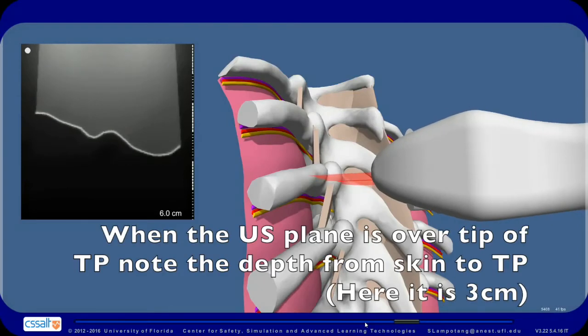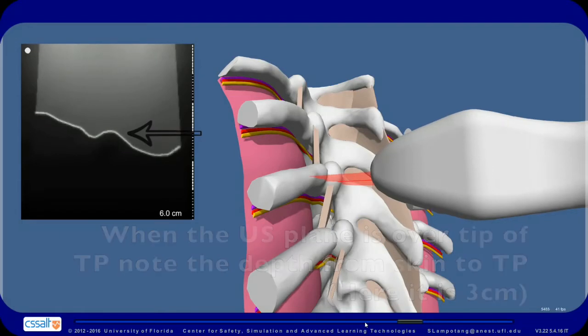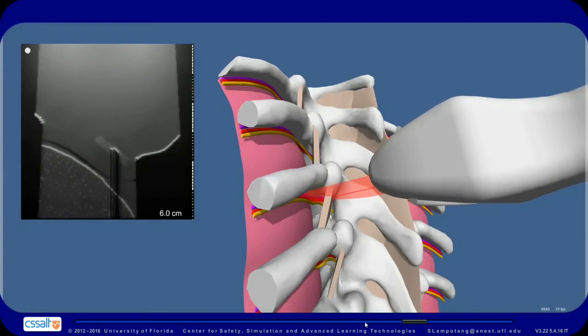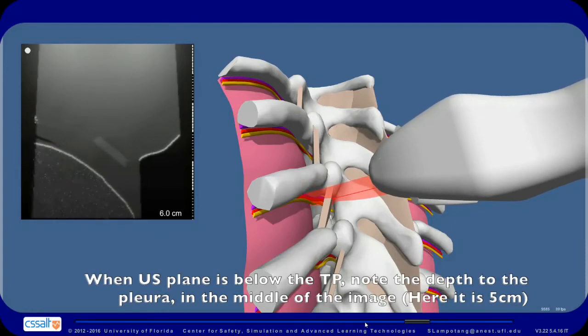When the ultrasound plane is over the tip of the TP, note the depth from the skin to the TP — here it is 3 centimeters. When the ultrasound plane is below the TP, note the depth to the pleura in the middle of the image — here it is 5 centimeters.